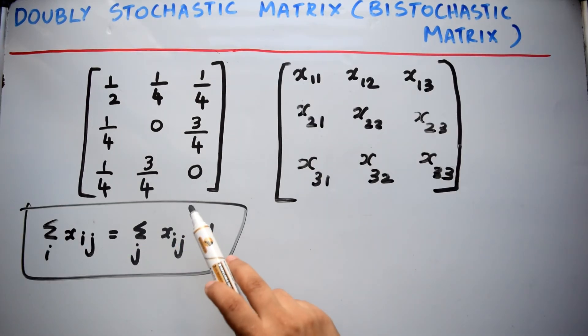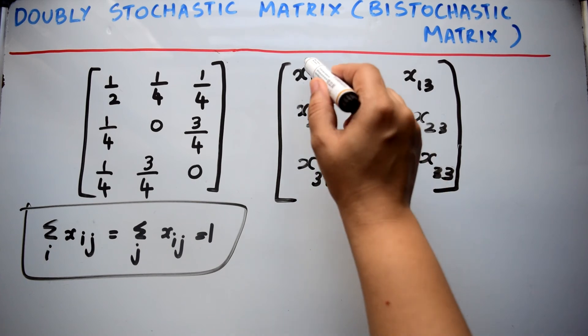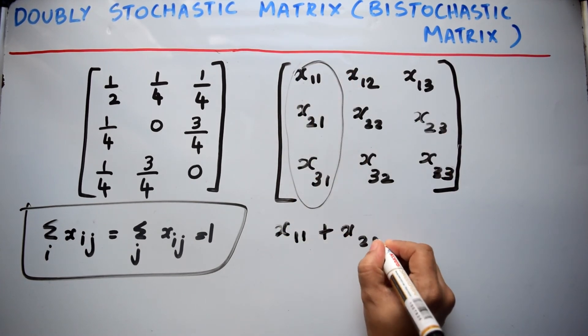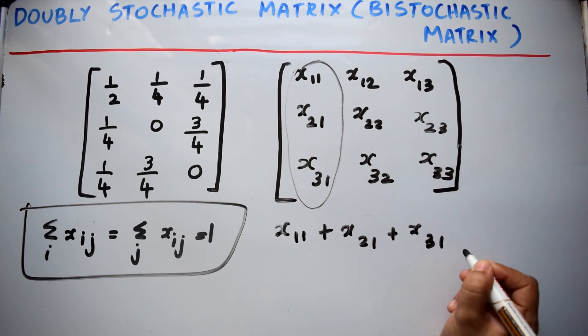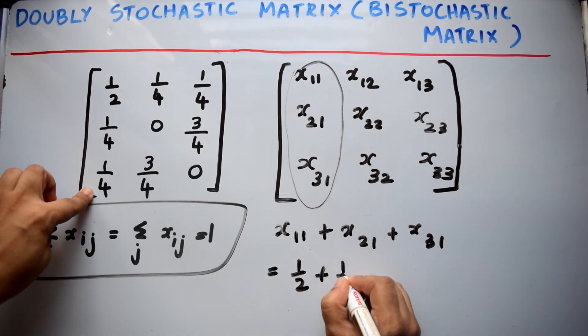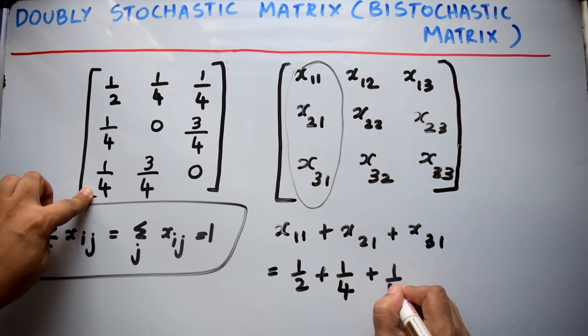If you write this matrix in xij form, it will be like this. Now, if you consider this column and add the elements, it will be x11 plus x21 plus x31. So, 1/2 plus 1/4 plus 1/4 equals 1, the sum is 1.